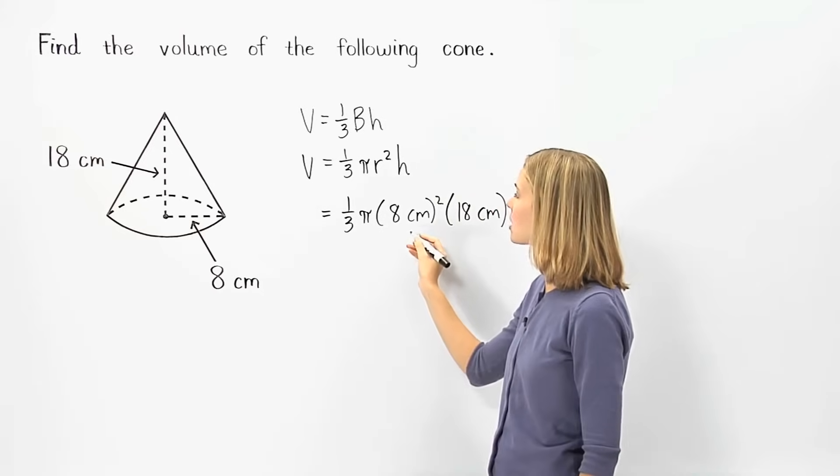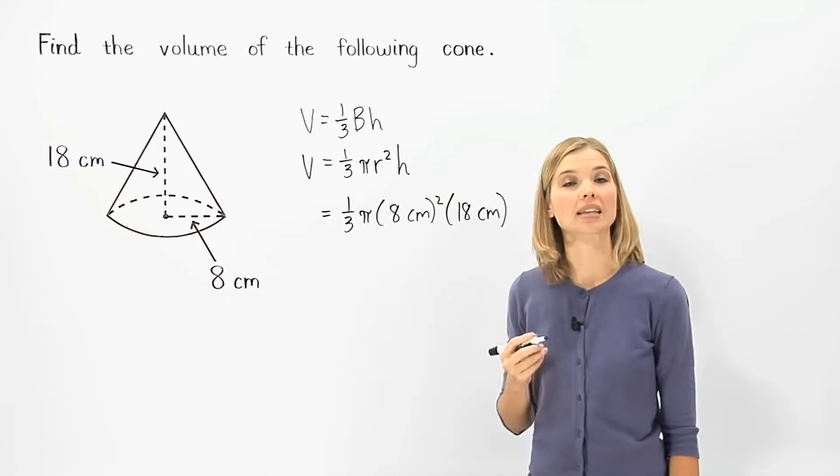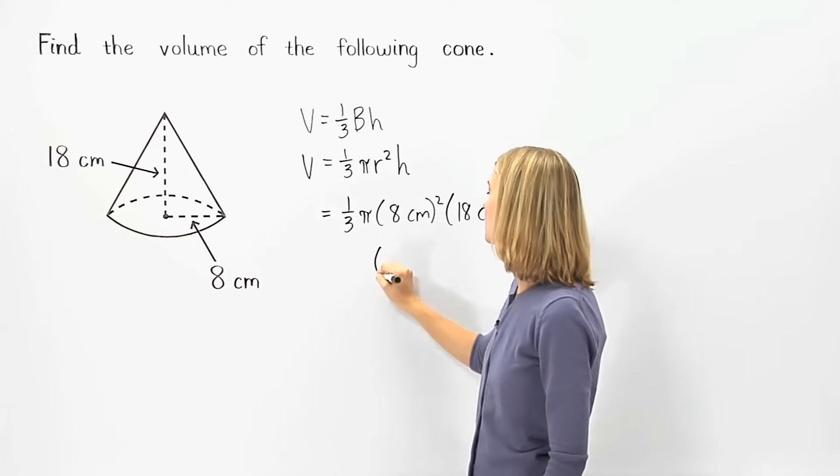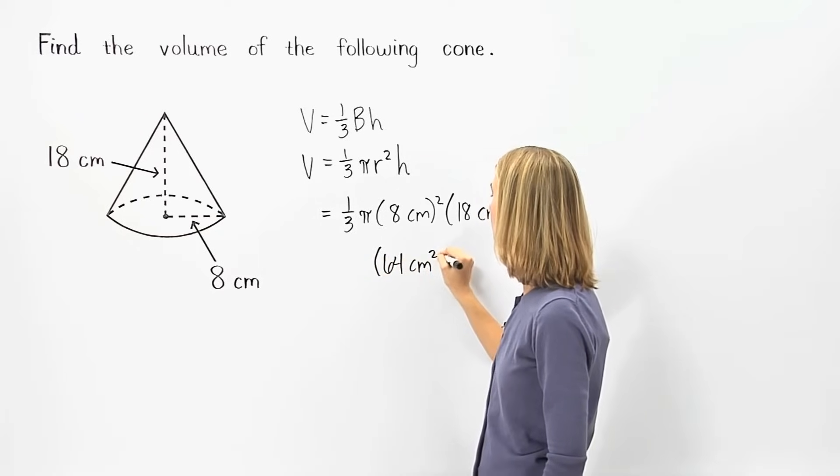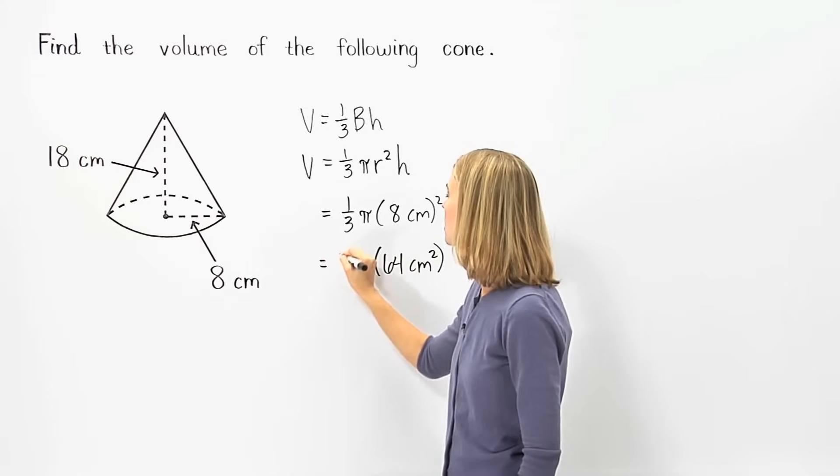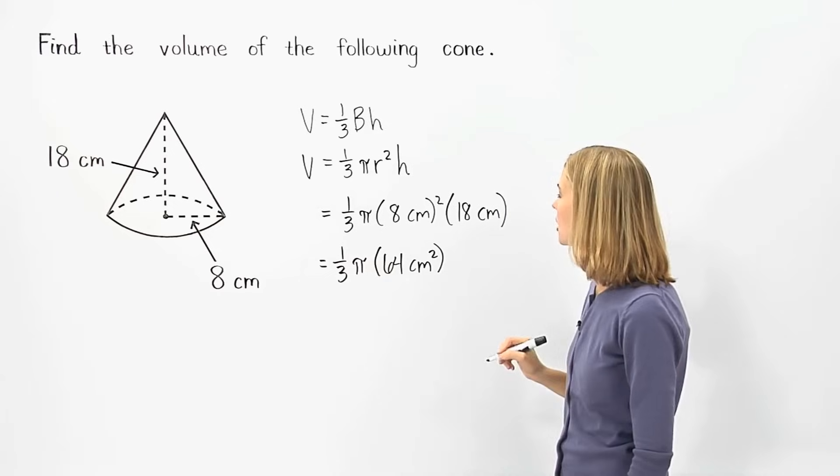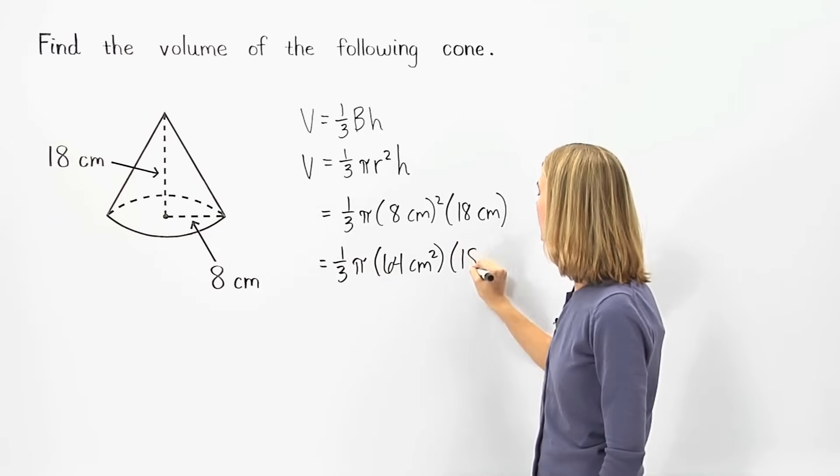Remember that 8 centimeters squared is the same thing as 8 centimeters times 8 centimeters, which equals 64 centimeters squared. And we have one-third pi times 64 centimeters squared times 18 centimeters.